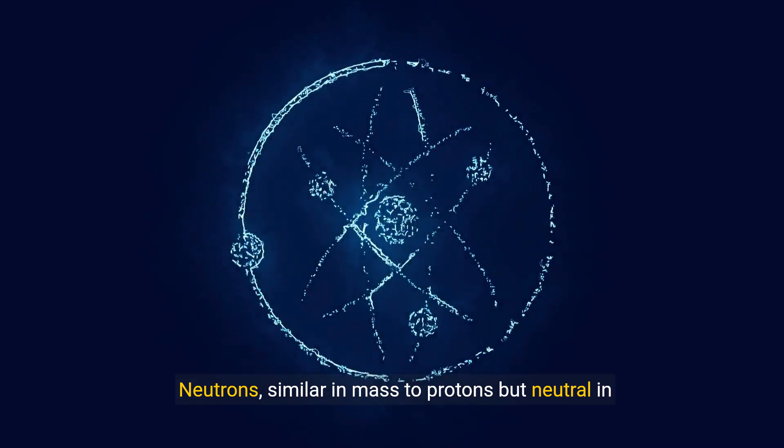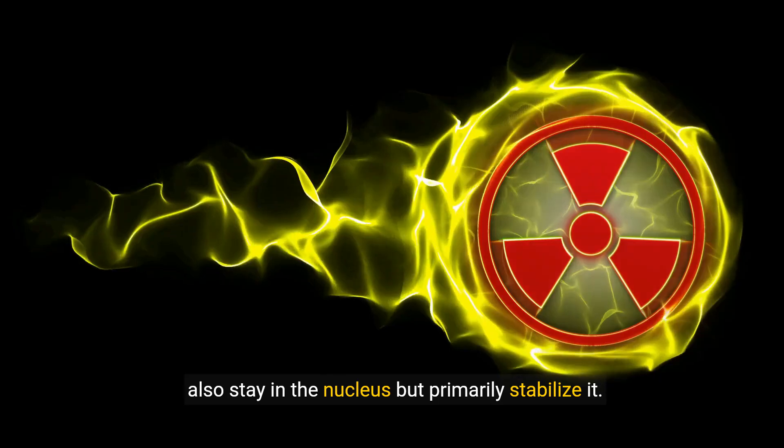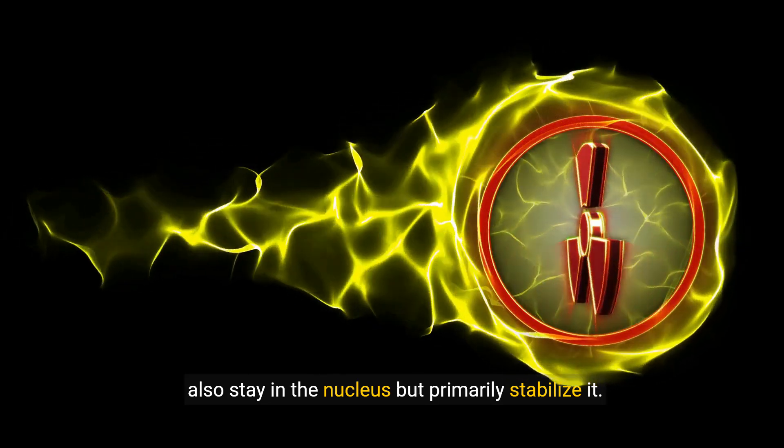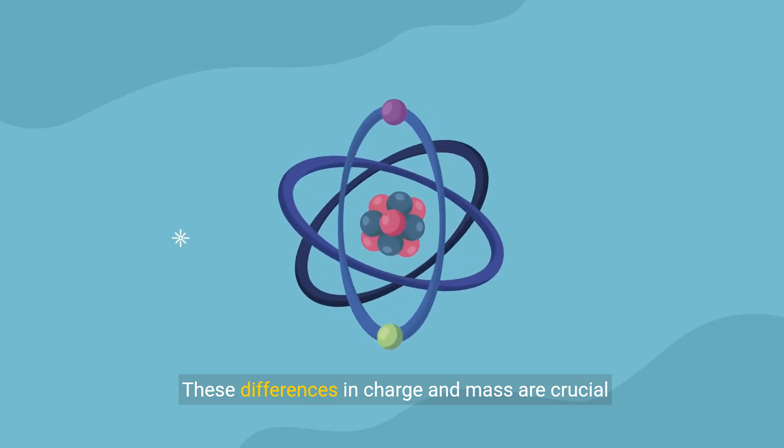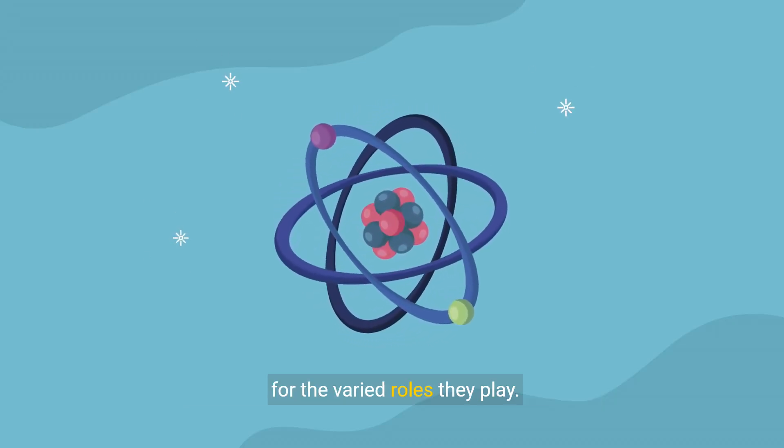Neutrons, similar in mass to protons but neutral in charge, also stay in the nucleus but primarily stabilize it. These differences in charge and mass are crucial for the varied roles they play.